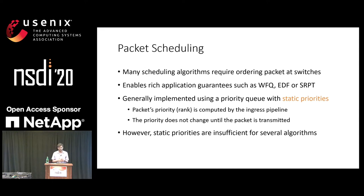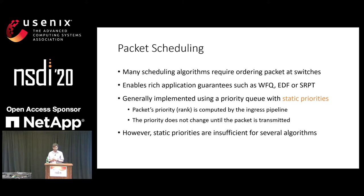Many scheduling algorithms today require careful ordering of packets inside the network at switches in order to enable rich application guarantees such as fair bandwidth allocation, timely delivery of packets using earliest deadline first scheduling, or even optimizing for flow completion time using something like shortest remaining processing time scheduling. Generally these policies are implemented using a priority queue with static priorities.